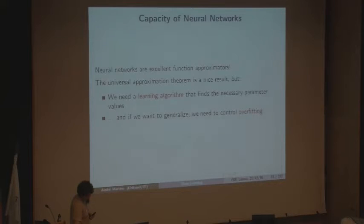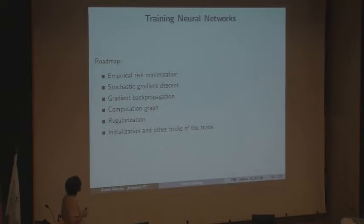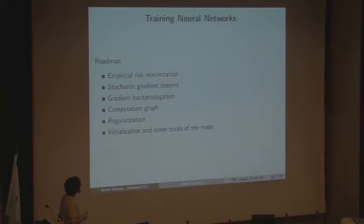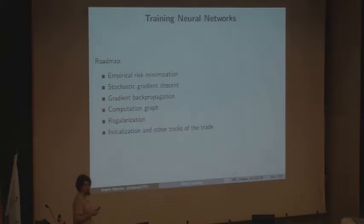Moving on to training neural networks. Here's a quick roadmap: I'm going to talk about empirical risk minimization, then stochastic gradient descent — the most popular algorithm to train neural networks — then gradient backpropagation, which is the key step needed for stochastic gradient descent, the notion of computation graphs, regularization, and then some tricks of the trade — for example, the initialization issue that was just asked about.